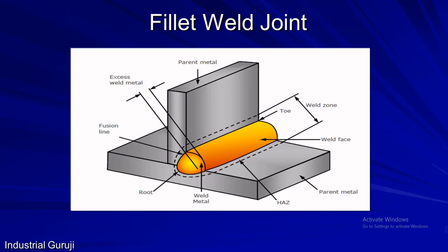Fillet weld is a fusion weld which is approximately triangular in cross section. Fillet welds refer to a process of joining two pieces of metal together when they are perpendicular or at right angles. In this figure, terminologies regarding fillet weld are shown. These are quite familiar to us, but here two terms are new: fusion line and weld zone. Fusion line is a line between base metal and weld metal, and weld zone is the area containing HAZ and weld metal.